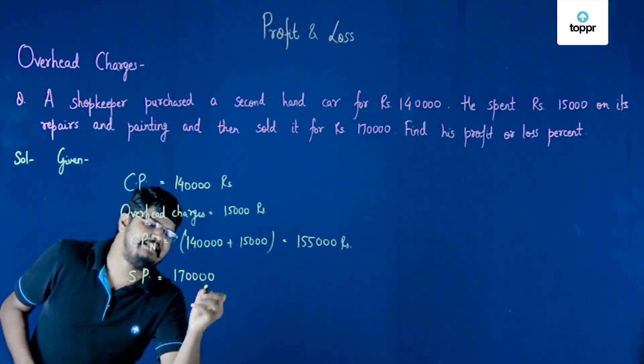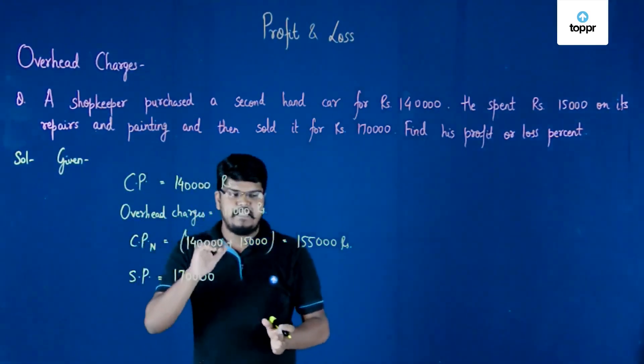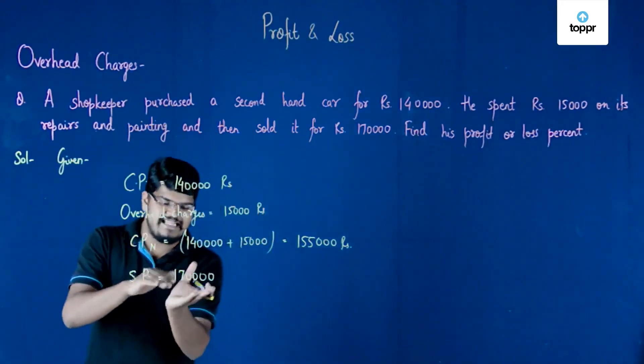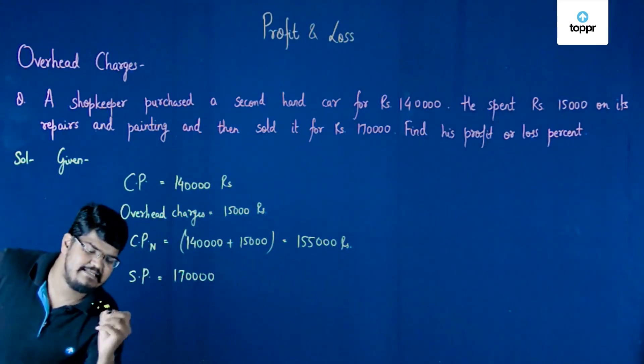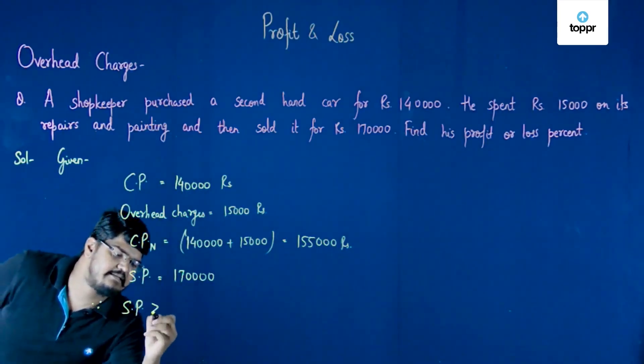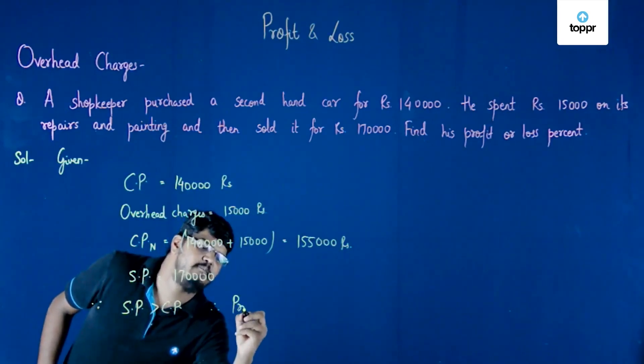I can clearly see that if I consider this amount and this amount, the selling price is more than the cost price. So I can say that since selling price is greater than the cost price, therefore it is the case of profit.